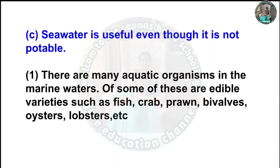C) Sea water is useful even though it is not potable. Even though sea water cannot be drunk, it is very useful. There are many aquatic organisms in marine waters; some of these are edible varieties such as fish, crab, prawn, bywurls, oysters, lobsters, etc.